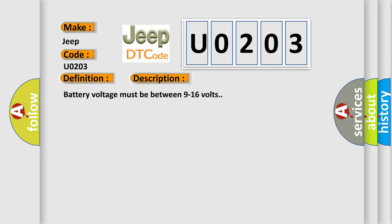And now this is a short description of this DTC code. Battery voltage must be between 9 to 16 volts. This diagnostic error occurs most often in these cases.